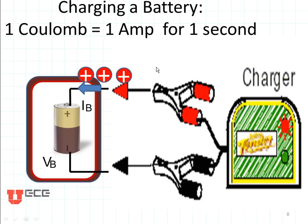Let's do an example. Let's suppose that we want to charge a battery, and if we have a battery charger that can put out one amp and we turn it on for one second, we will have dumped one coulomb of charge into our battery.